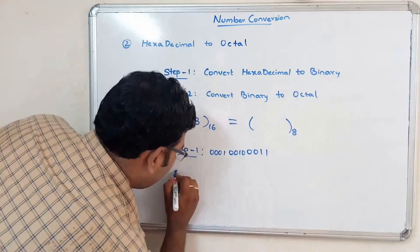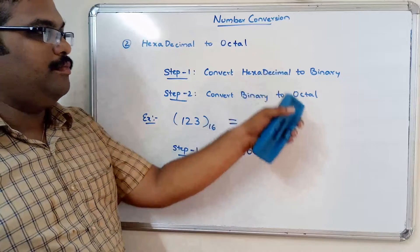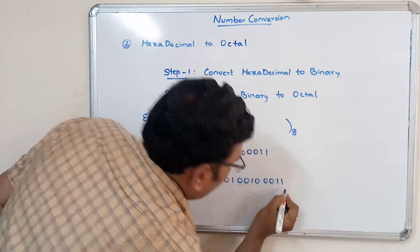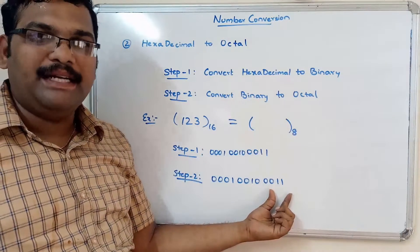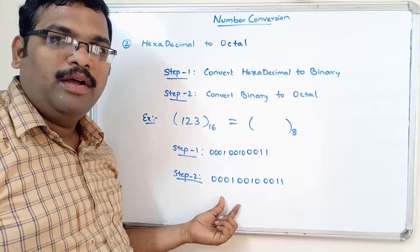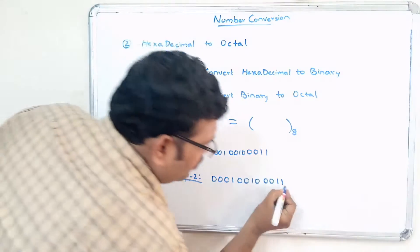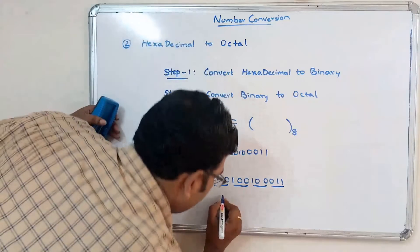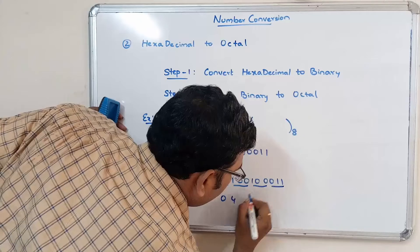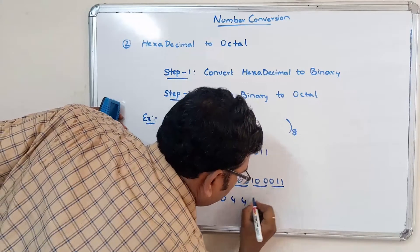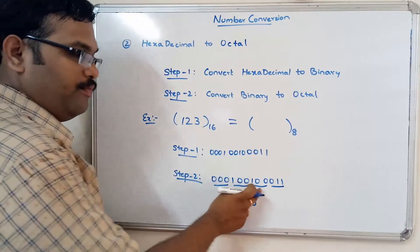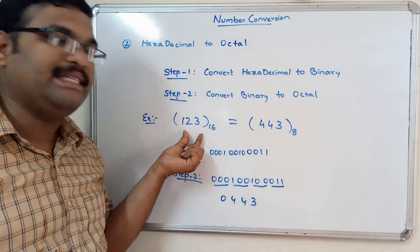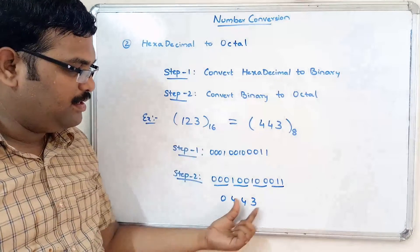Step 2: convert binary to octal by grouping into 3 bits. Group the bits — we get five groups. Converting each group to its decimal equivalent gives: 0, 4, 4, 4 and then 3. Wait — the result is 4, 4, 3, so the octal representation of hexadecimal 123 is 443.